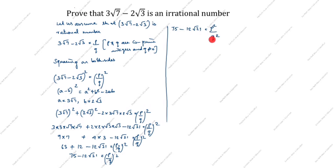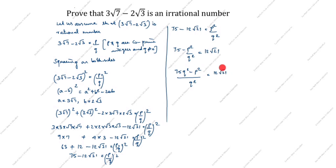Now bring p squared over q squared to this side — it becomes plus 12 root 21. Cross multiplying: 75 q squared minus p squared divided by q squared equals 12 root 21. Bringing 12 to the denominator: 75 q squared minus p squared divided by 12 q squared equals root 21.